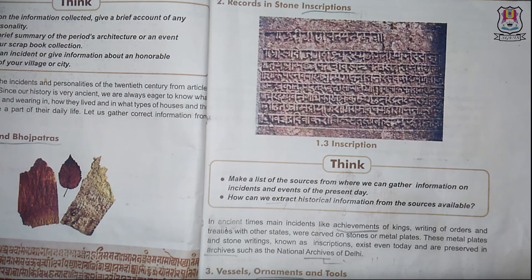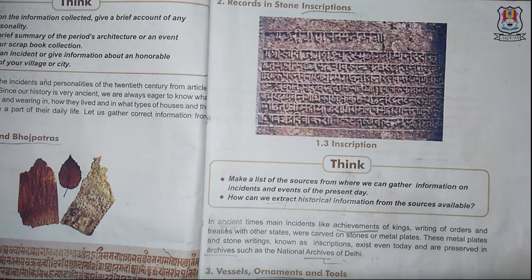Records in stone inscriptions: In ancient times, main incidents like achievements of kings, writings of orders and treaties with other states were carved on stones or metal plates. These metal plates and stone writings, known as inscriptions, exist even today and are preserved in archives such as the National Archives of Delhi. Pehle ke time mein incidents jaise ki rajaon ke achievements aur orders, stone aur metal plates par ukere jaate the. Inhe hum inscriptions kehte hain. Ye sab National Archives of Delhi mein surakshit hain.